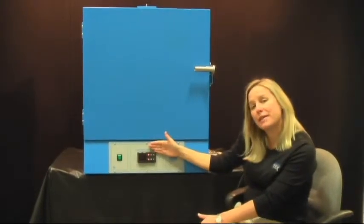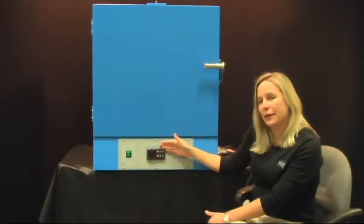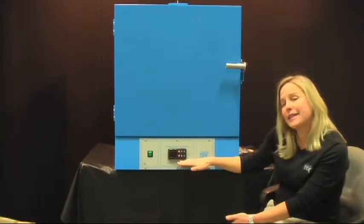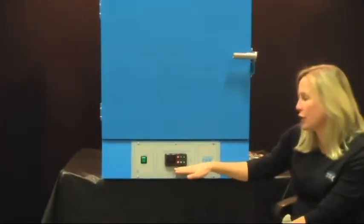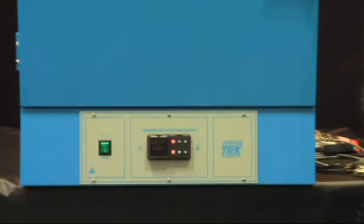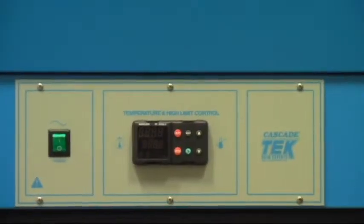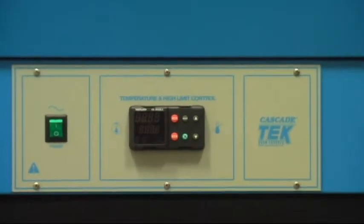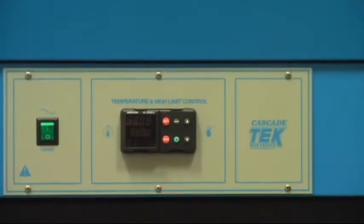Let's say a few words about the Cascade Tech control panel. The Cascade Tech oven controller is a fully programmable ramp and soak controller. What that means is that you can write what we call temperature profiles.